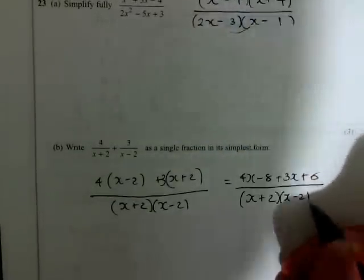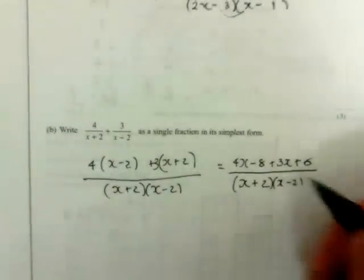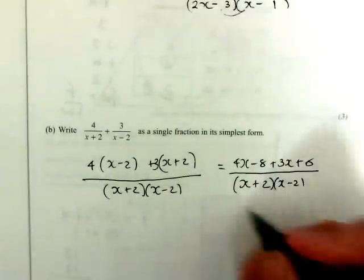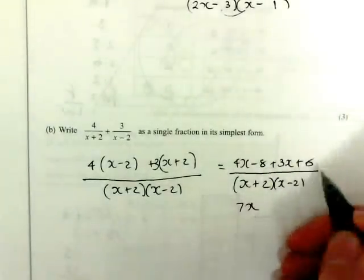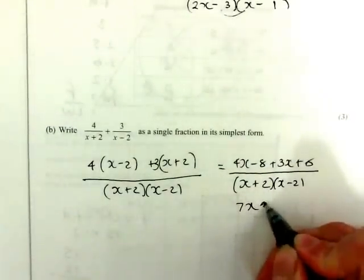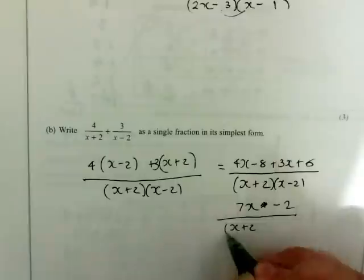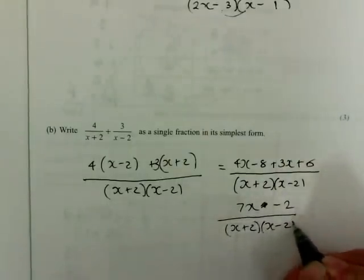And collect the like terms on the top. 4x plus 3x is 7x. Minus 8 plus 6 is minus 2, minus 8 plus 6 minus 2, all over x plus 2 times x minus 2.